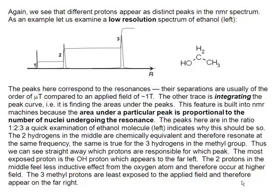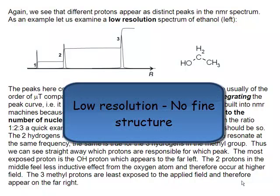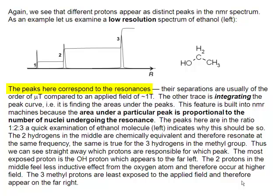So let's imagine we do a low-resolution spectrum. We're going to see three peaks, and each one is going to correspond to a different proton here: the methyl proton, methylene proton, and the OH group. And another very useful feature of NMR, the intensity of these transitions.